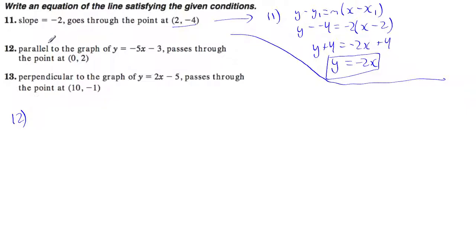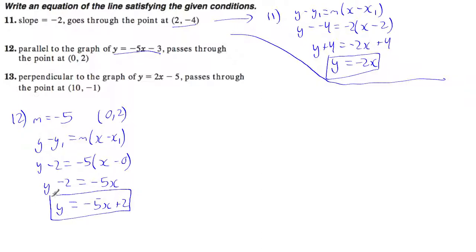For number 12, I can see that I want to find the equation of a line that's parallel to this, and it passes through this point. Well, parallel lines have same slopes. So if this slope is negative 5, the slope for the new equation is also going to be negative 5. And it goes through the point 0, 2. So again, I have a point and a slope, so I'm going to use point-slope form. So again, y minus y₁ is equal to m times x minus x₁. So y minus 2 is equal to negative 5 times x minus 0. So this is going to be y minus 2 is equal to negative 5x. Here, negative 5 times negative 0, or just 0, is 0. If I add the 2 to both sides, I get y is equal to negative 5x plus 2. This is the equation of the new line. Note that the slope here is negative 5, as it is with this equation. So they are definitely parallel.